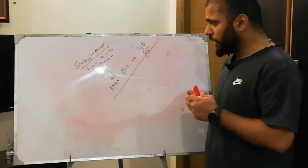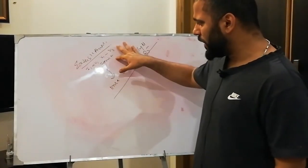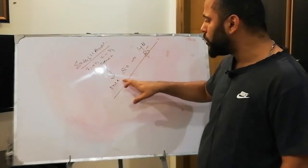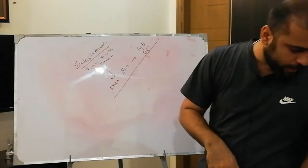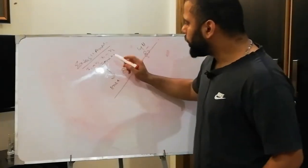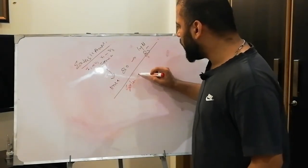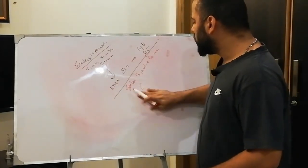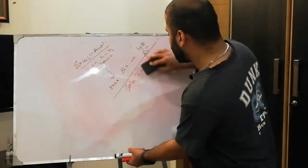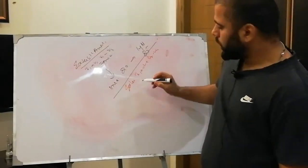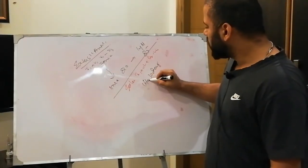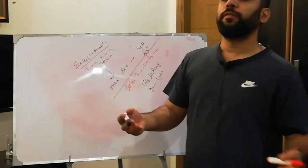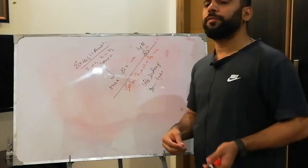If the patient is coming with extensive anterior wall MI — leads 1, AVL, V2 to V3 involved with fascicular block — then the mortality at one month is 20% and at one year is 25%. Without fascicular block, the 30-day mortality is 10% and the 1-year mortality is 20%. The ECG data itself tells us about the risk stratification of the patient.